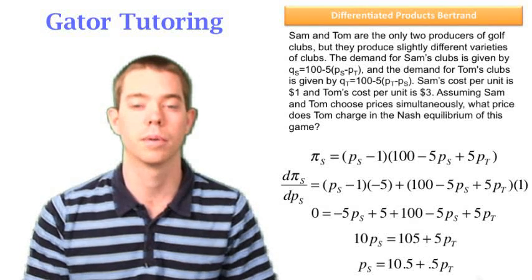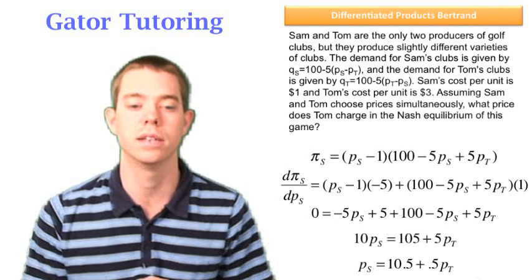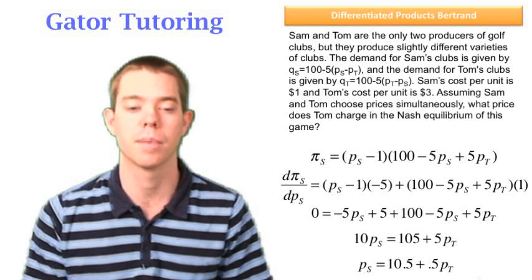In the homogeneous products, they were downward sloping. We had a negative sign there. In differentiated products, they're upward sloping. We have that positive sign.